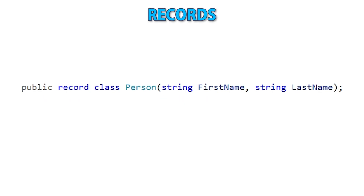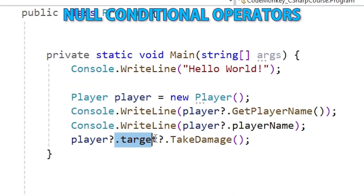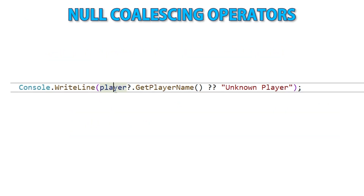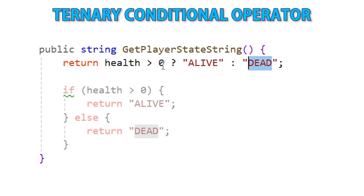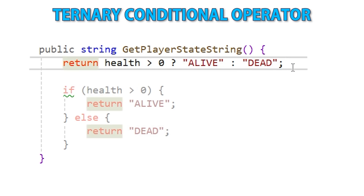After that we'll see a lecture on records — a super simple way to create immutable types to organize your data. Next, the null conditional operators, which let you easily test for null before doing something, like firing off an event. Then the null coalescing operator, which lets you quickly test against null and return a default value if it is null. After that, the ternary conditional operator — an excellent, super compact syntax for a simple if with condition, if-branch, and else-branch, all very tiny and very useful.